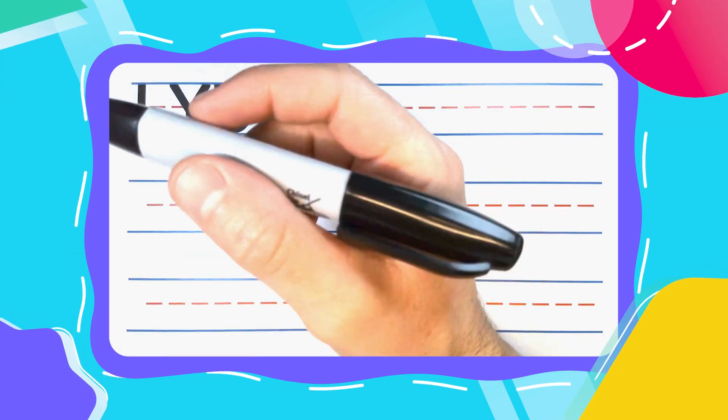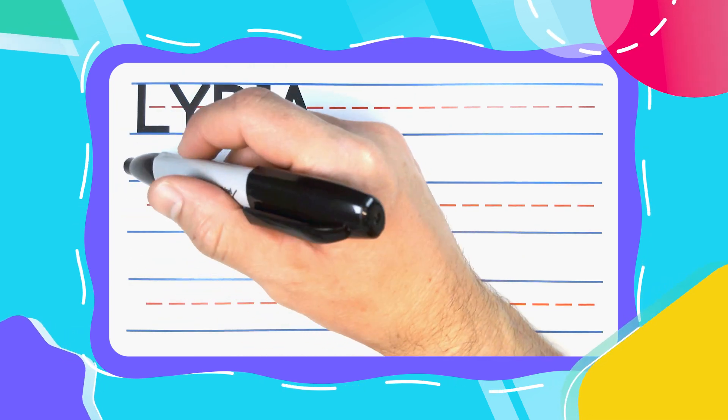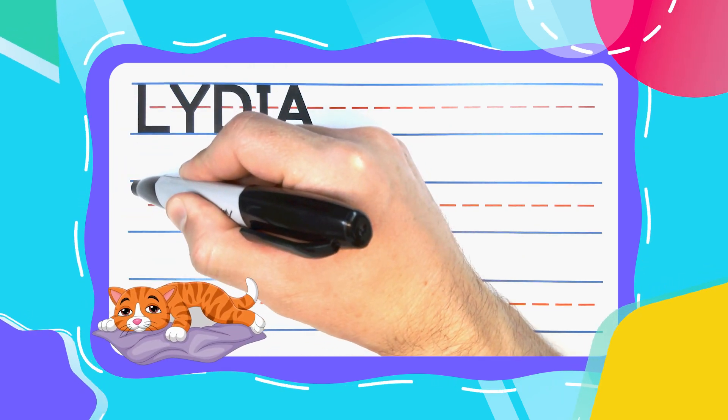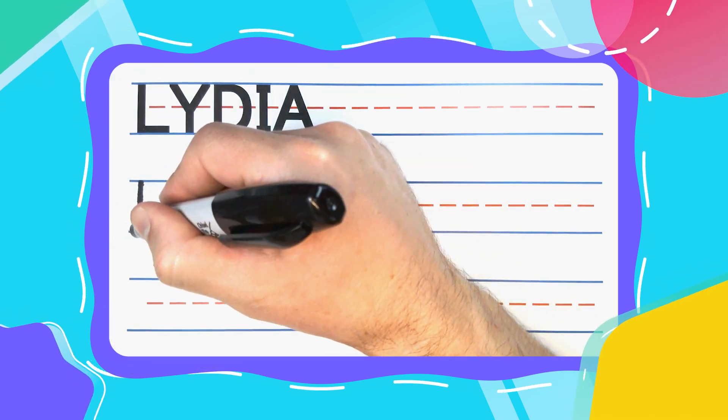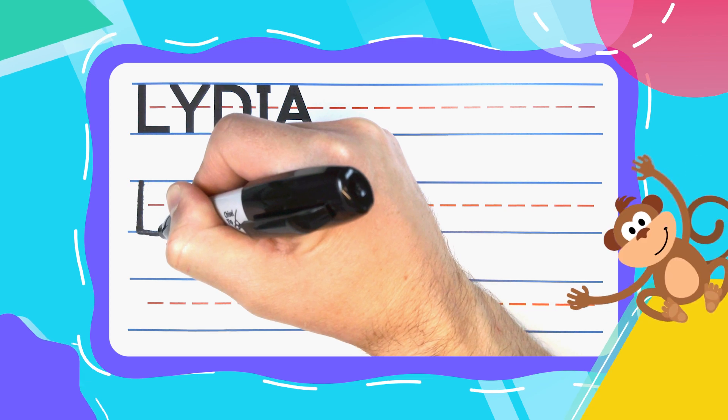Lydia spelled L-Y-D-I-A. Now let's get started with the lazy L. Lazy L's start with a straight line down and kick a lazy leg out to the right.